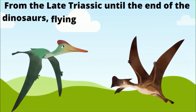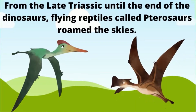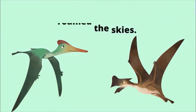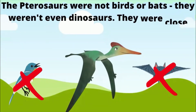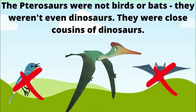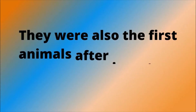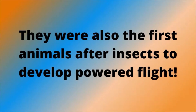From the late Triassic until the end of the dinosaurs, flying reptiles called pterosaurs roamed the skies. The pterosaurs were not birds or bats — they weren't even dinosaurs. They were close cousins of dinosaurs, and also the first animals after insects to develop powered flight.